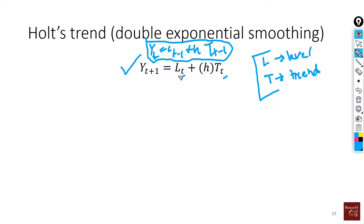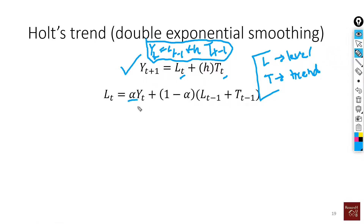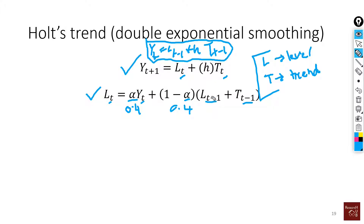Decomposing gives us an equation for L(t). We use the smoothing parameter alpha, which is quite similar to simple exponential smoothing. L(t) is modeled as alpha times the real value at time t, plus one minus alpha times the summation of the previous level L(t-1) and previous trend T(t-1). For example, if alpha is 0.4, the weight on the previous terms is 0.6.